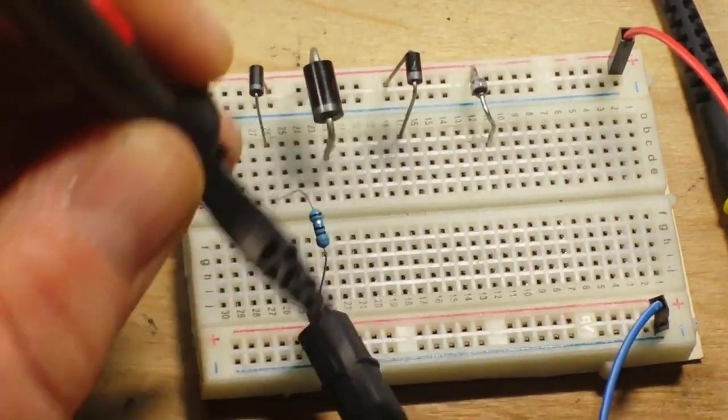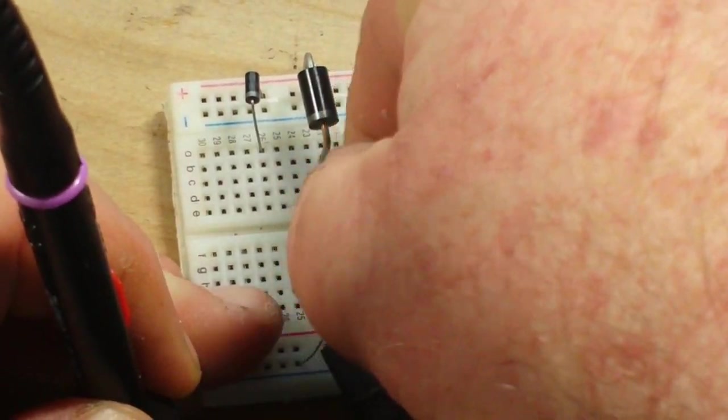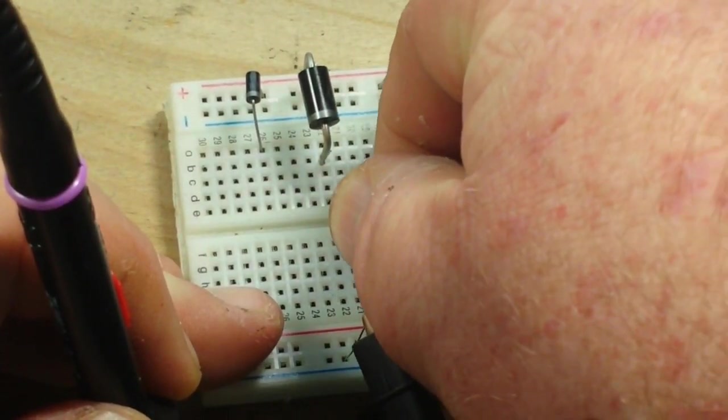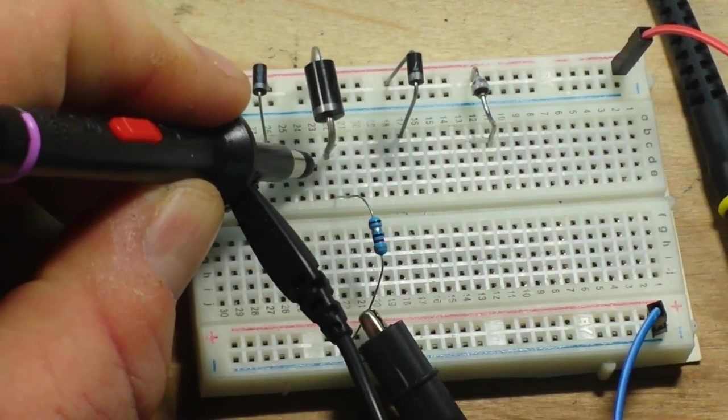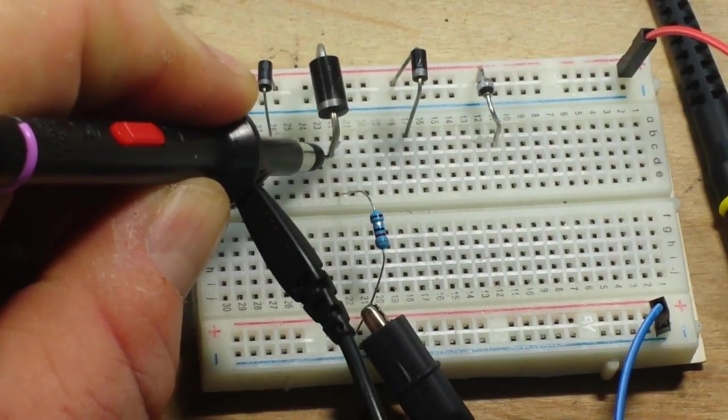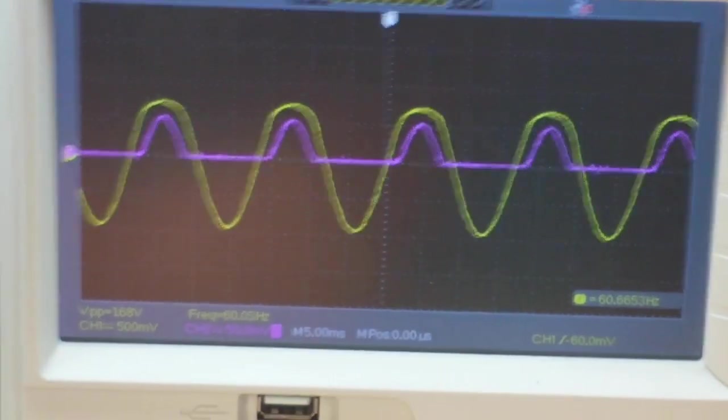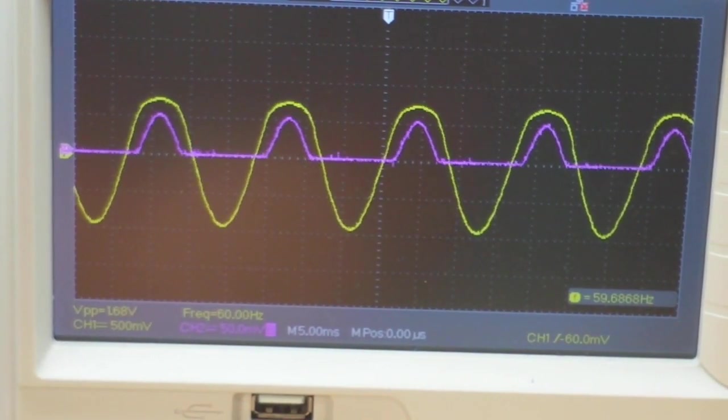So we'll move over and we'll take a look at the 1N5400, which is the power diode. And like I said, they're basically very similar diodes. So we're going to see very similar things. There we are at 60 hertz.